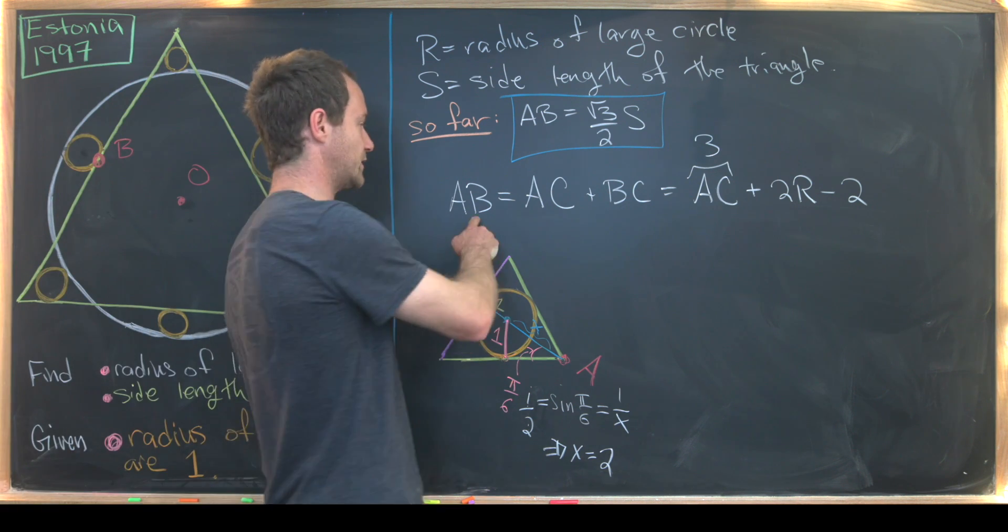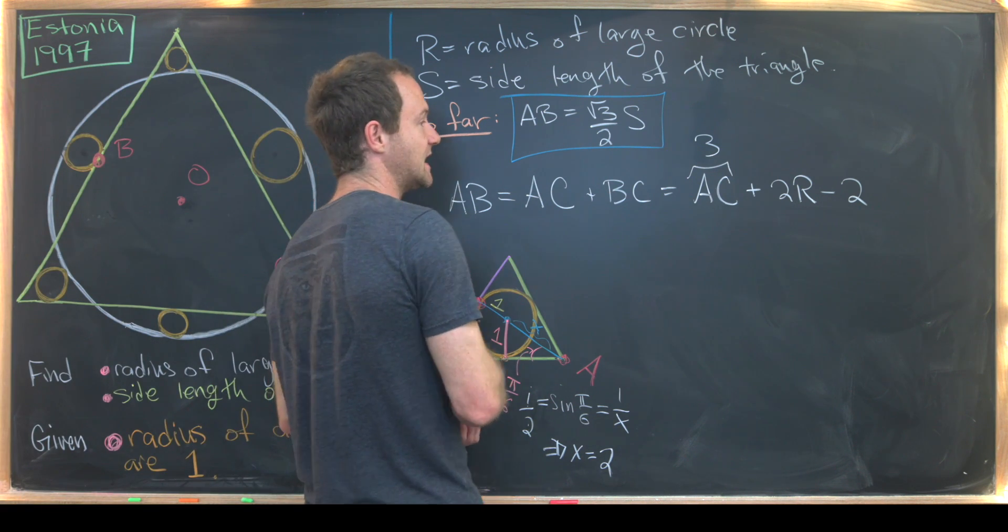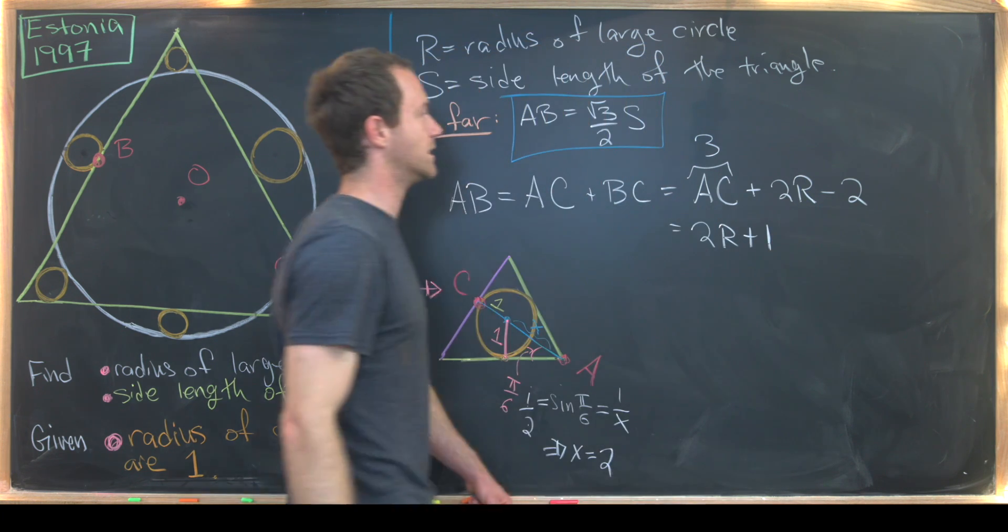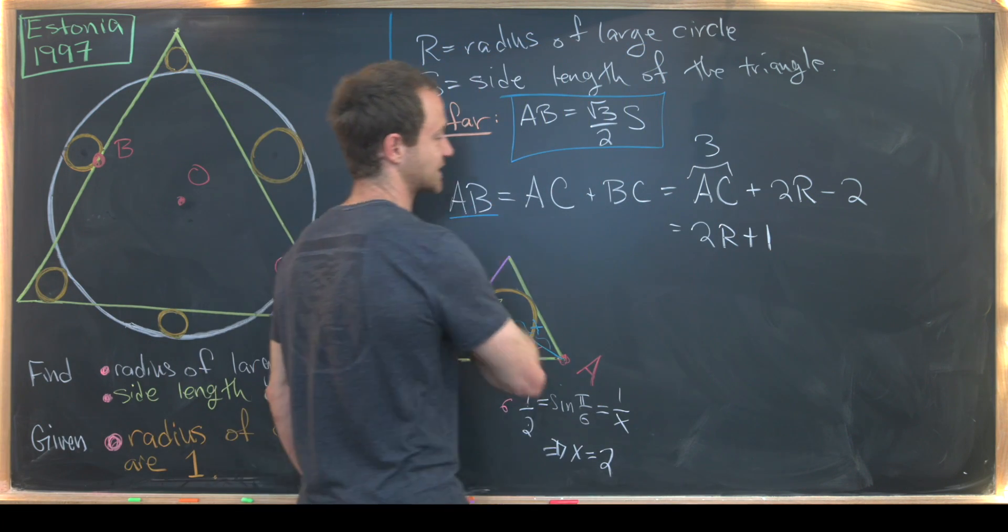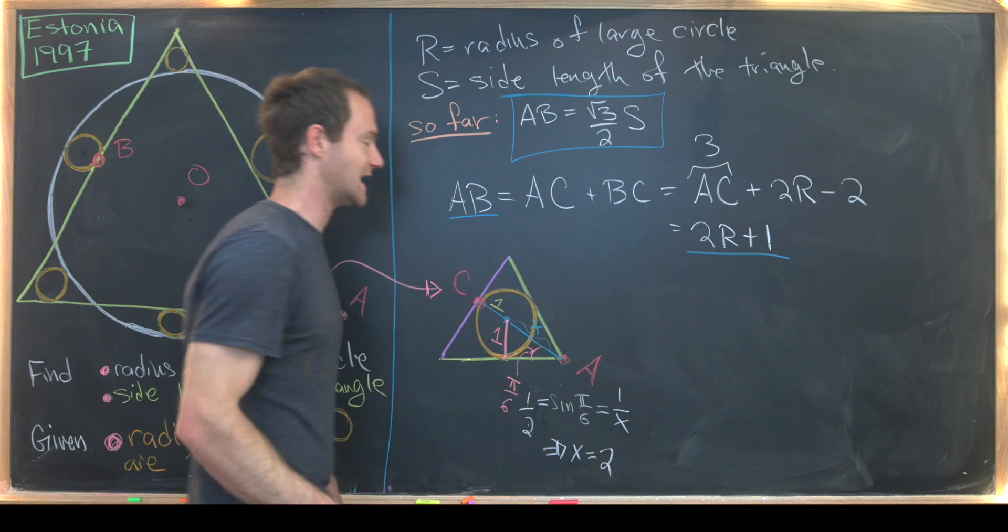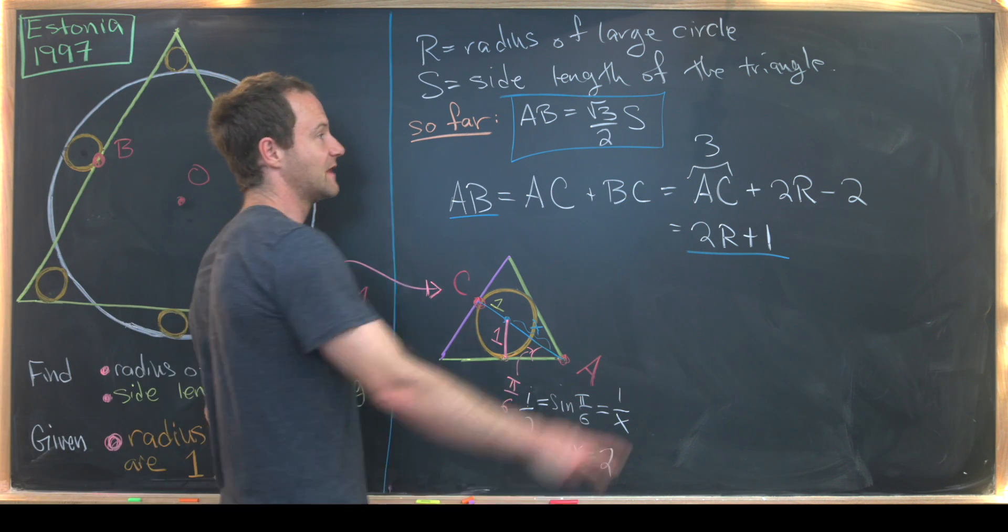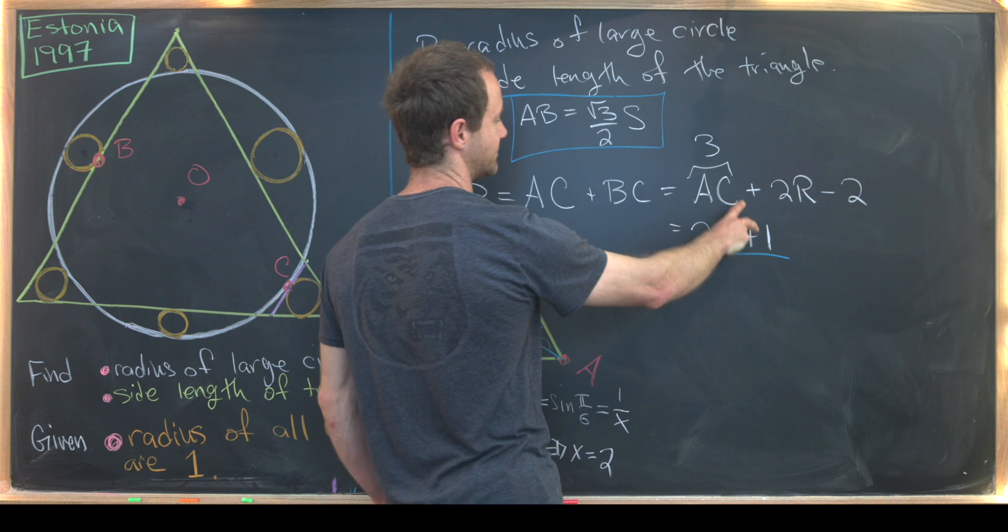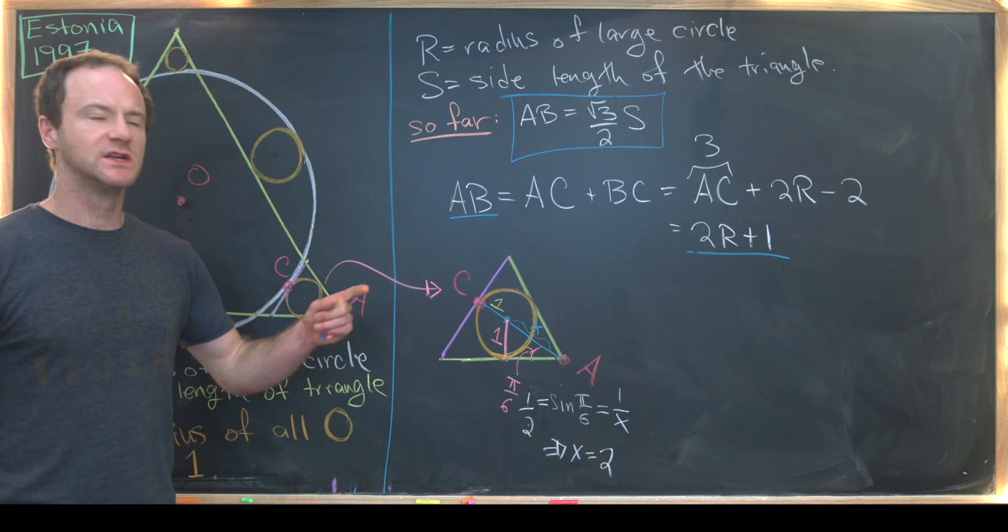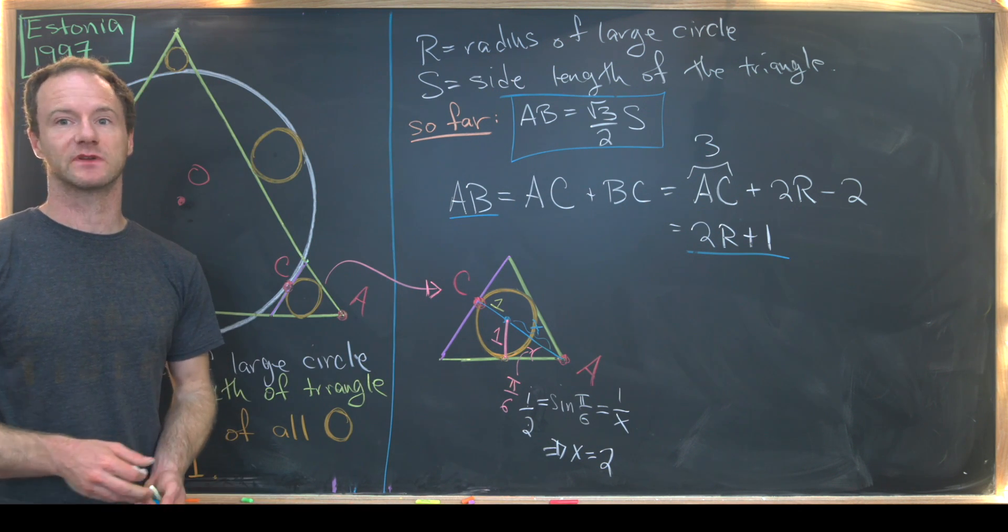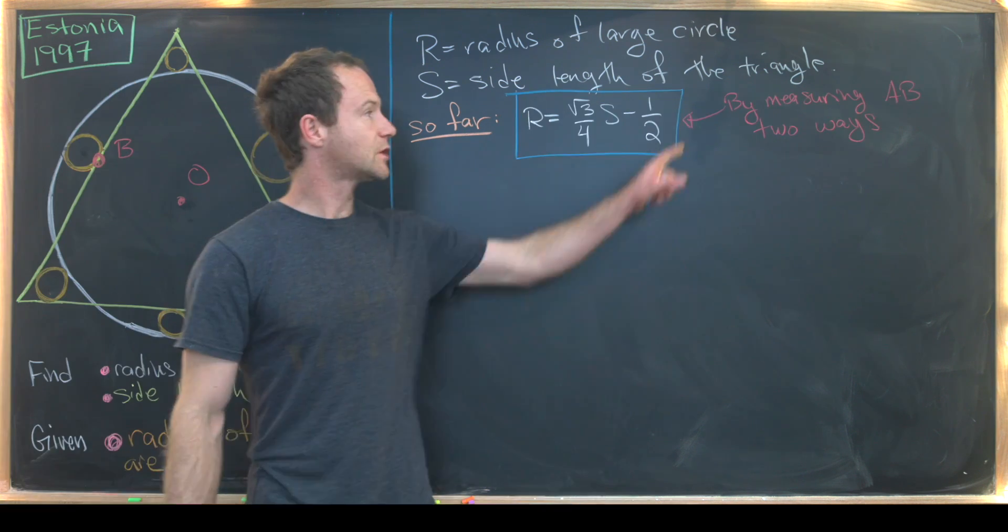So putting this all together, we see that AB is also equal to two R plus one. So that gives us another expression of AB in terms of the radius of the circle. And in turn, that gives us a linear relationship between S and R.